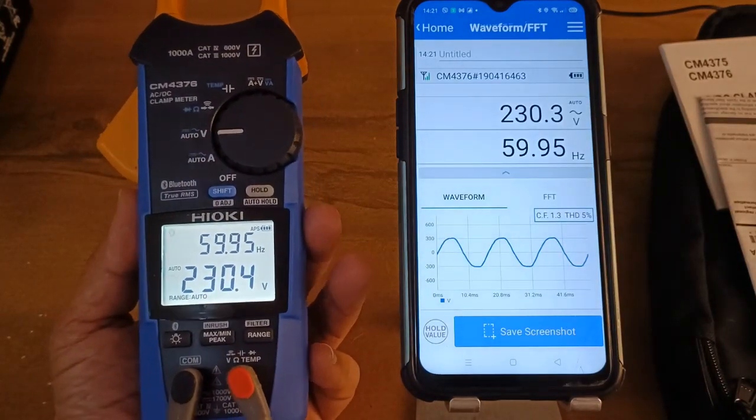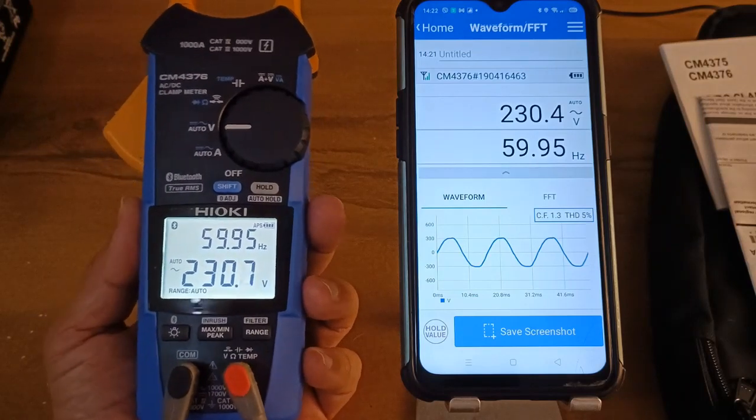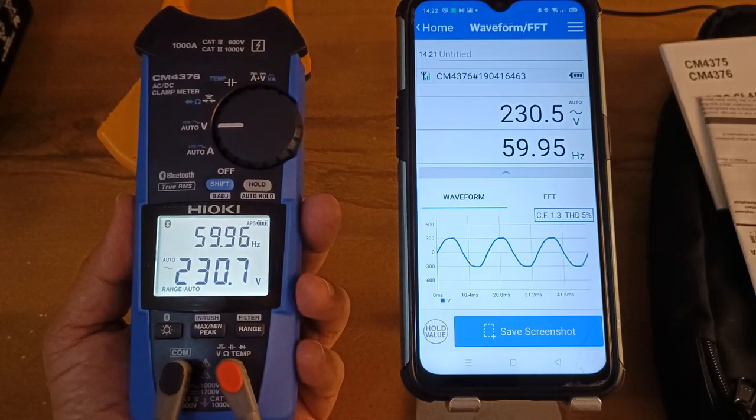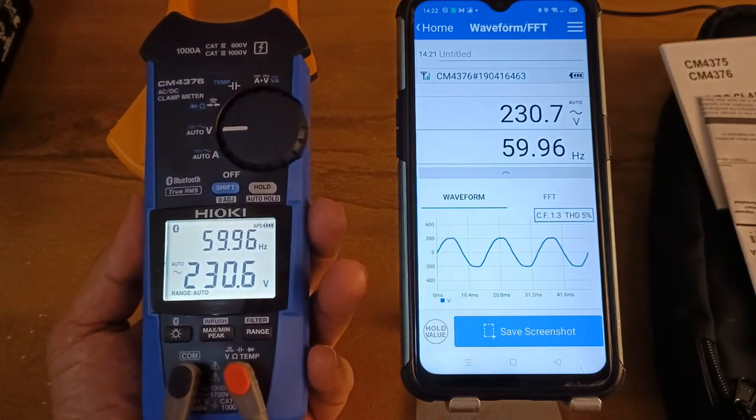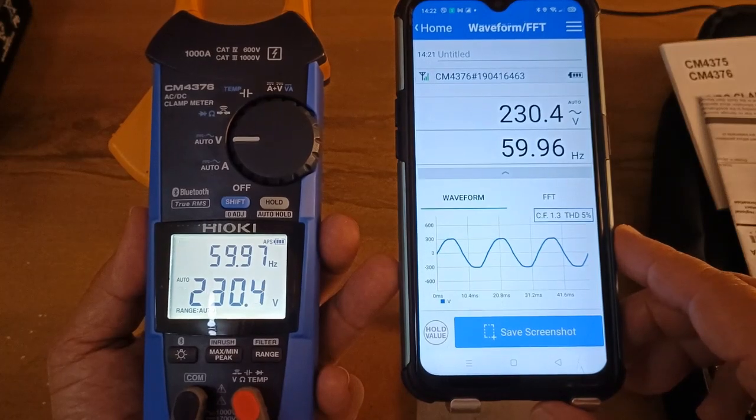One of the good things about the Hioki Genect Cross App is that it can display a very simple oscilloscope. So now I can see the voltage waveform of my outlet here, and it even shows the total harmonic distortion of 5%.